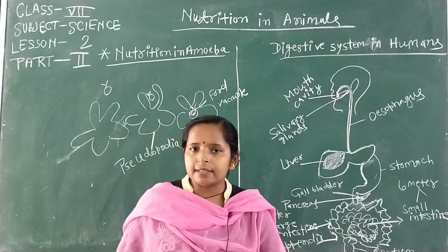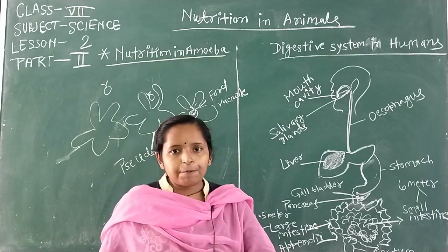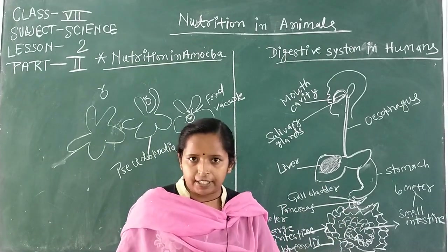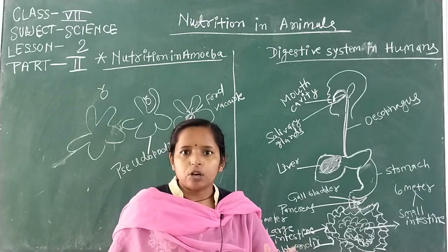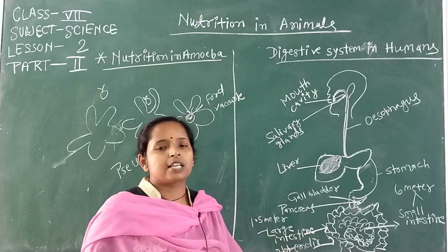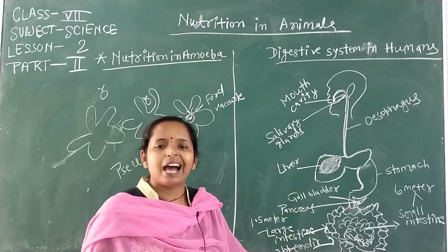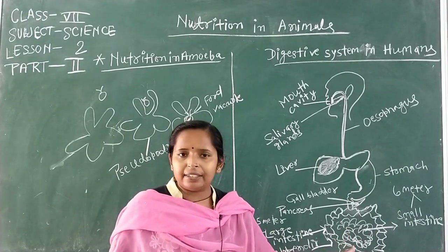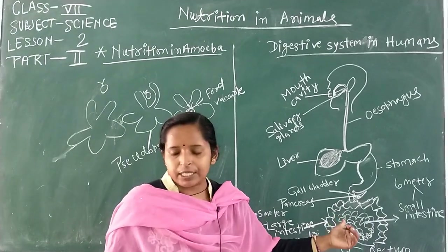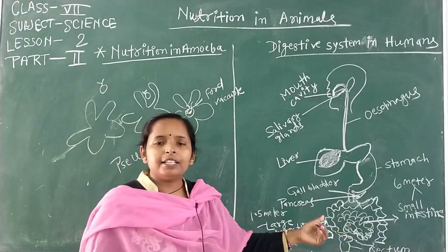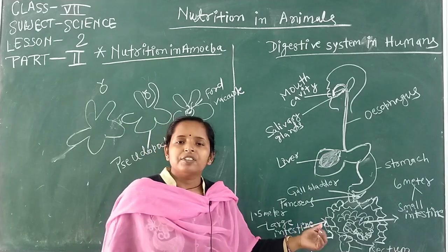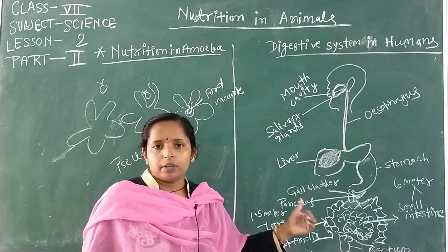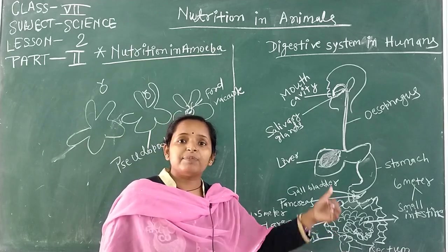The leftover semi-solid waste materials are transported to the large intestine, which has a main length of 1.5 meters. In the large intestine, water is generally absorbed from the waste material.